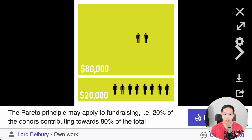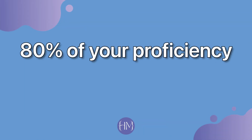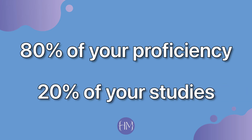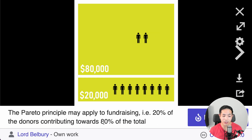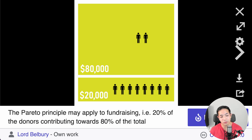So how would we apply this to learning how to code? We can say that 80% of your proficiency in programming is contributed by 20% of the concepts you would learn. I see a lot of programmers who are just learning and they focus on the 80% that would only really help them grow 20%. Instead, I would rather them focus on the 20% so that they can grow the 80%.